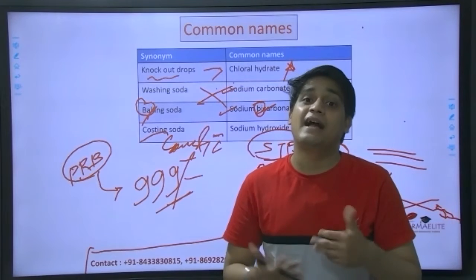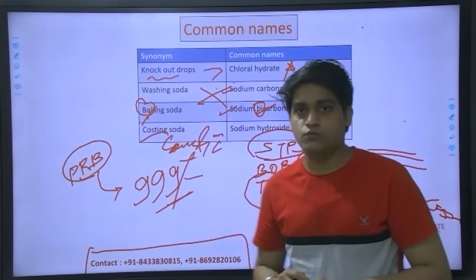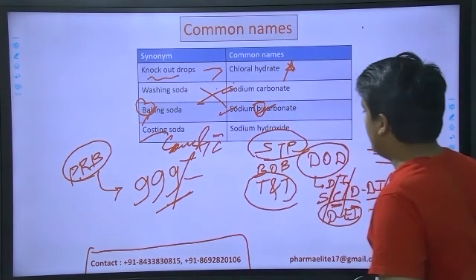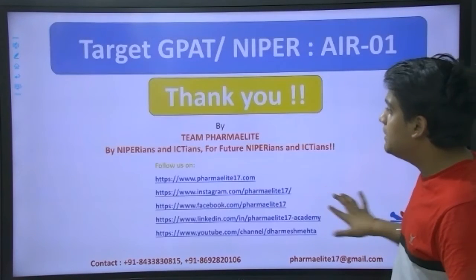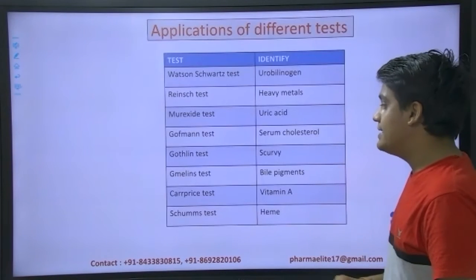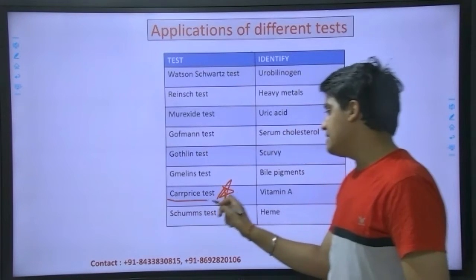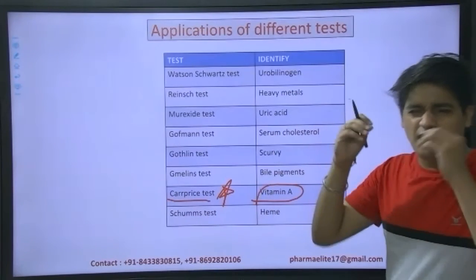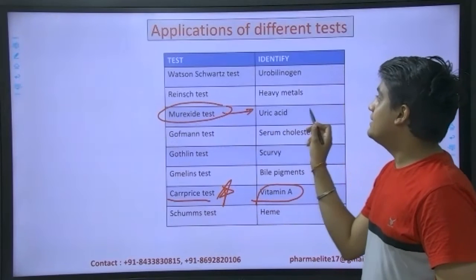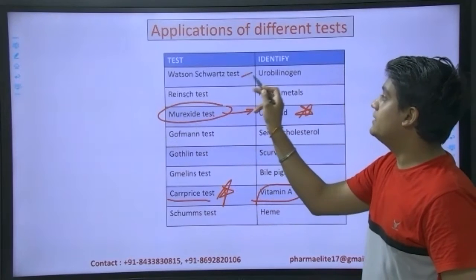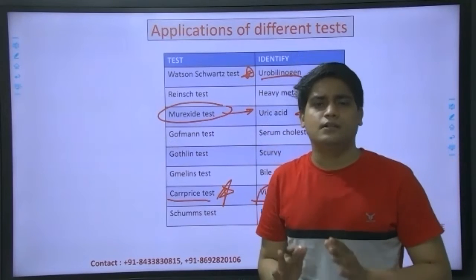Try to make the maximum use of your time, and at the same time ensure that you enjoy what you do so that the preparation doesn't become a burden. There are a few more tests - maybe next time. These tests are very important, especially this one: car price test, vitamin A - asked multiple times - and uric acid. The Watson test for uric acid is another widely asked question. These three are very important.